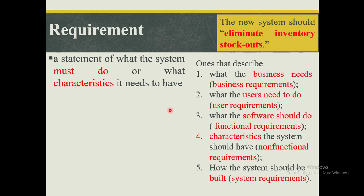We normally have different types of requirements. One that describes what the business needs — we refer to that as a business requirement. We may have a requirement that describes what the user needs to do — we refer to them as user requirements. We have requirements that describe what the software should do — functional requirements. Requirements that describe the characteristics the system ought to have — non-functional requirements. And lastly, requirements that describe how the system should be built — system requirements.